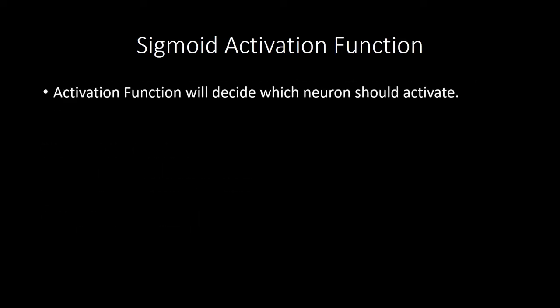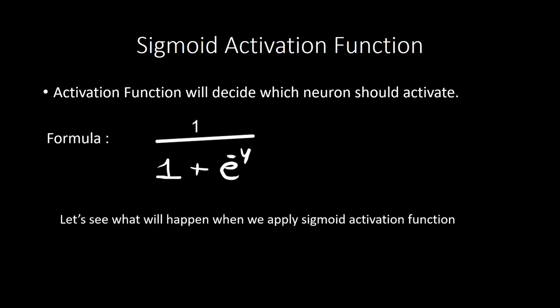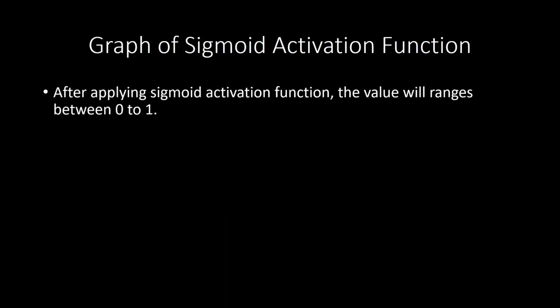Basically, an activation function will try to activate our neuron. The formula of sigmoid is: 1 upon (1 plus e to the power minus y). When we apply the sigmoid activation function, our output range will lie between 0 and 1.